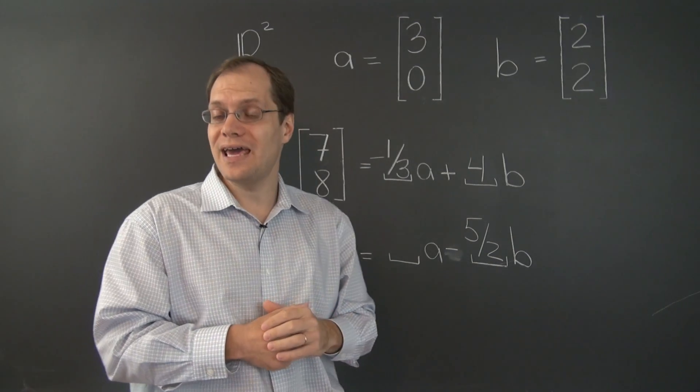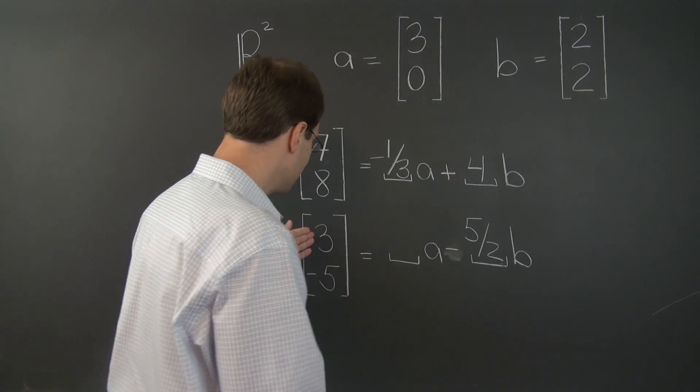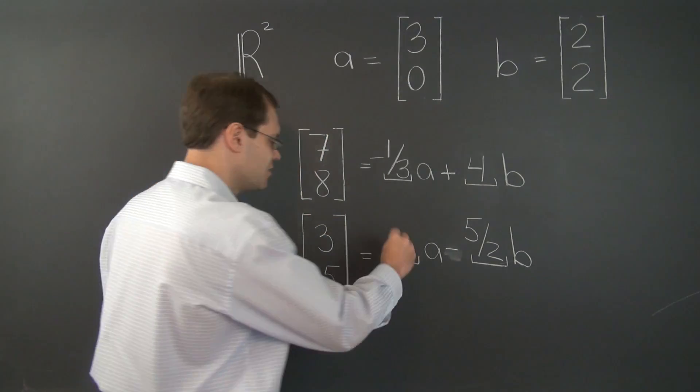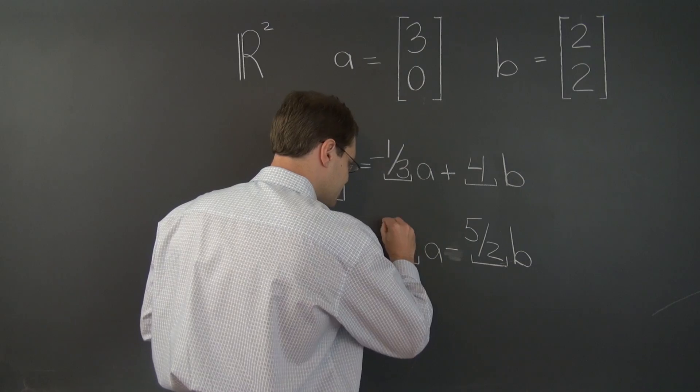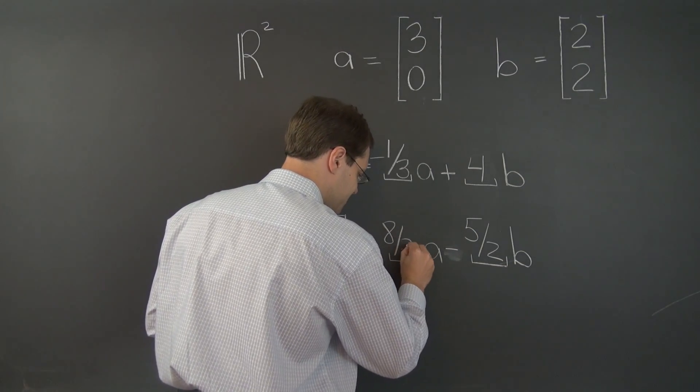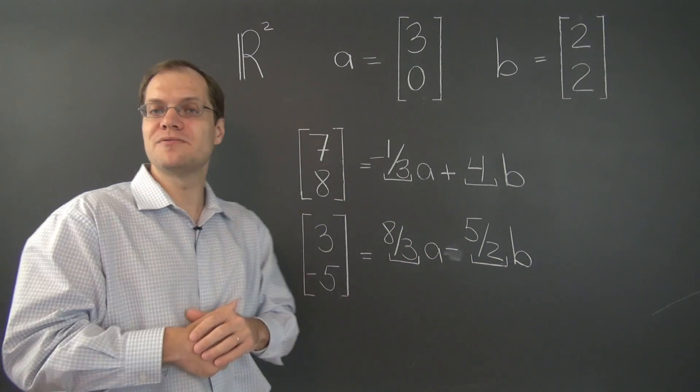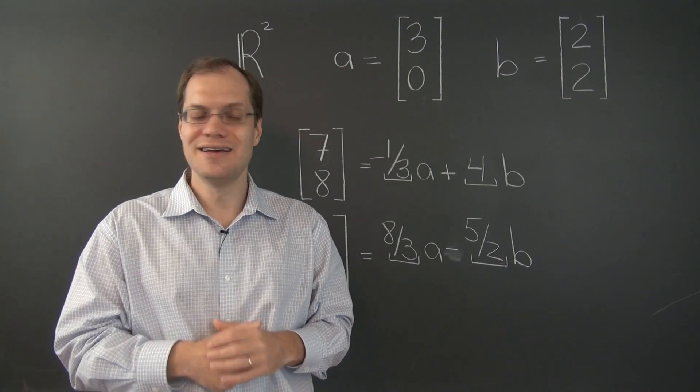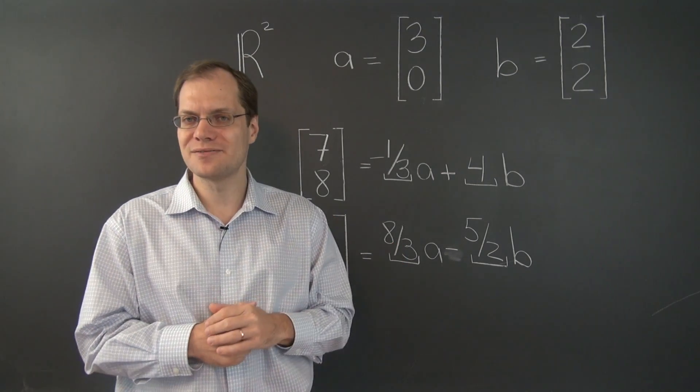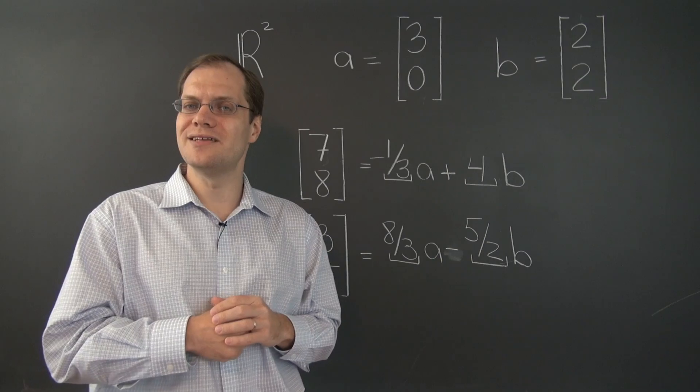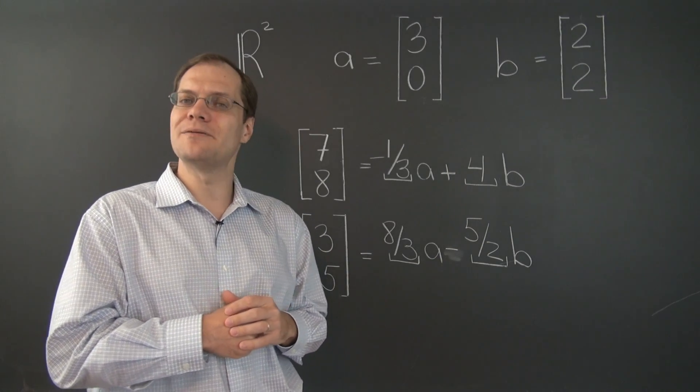So how much of A do we need to take to jump by 8 in the first entry? Well, the answer is 8 thirds. There we go. These two problems were really no more complicated than the same problems without fractions. But it's good to see just a little bit more of arithmetic complexity.